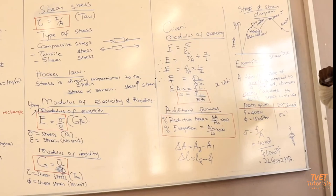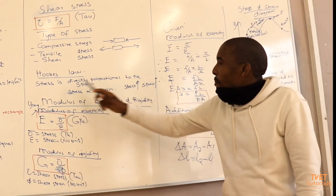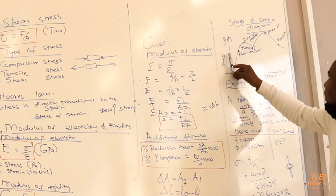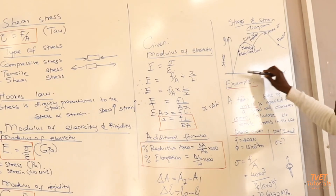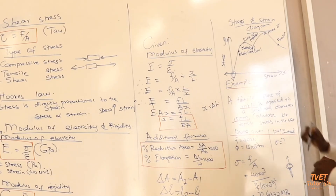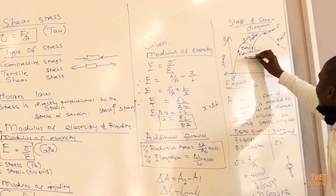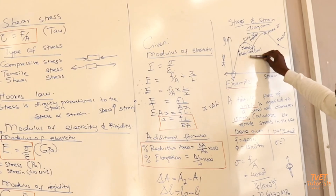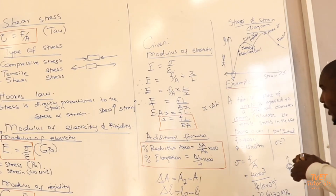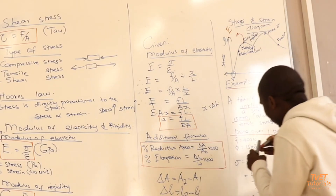The stress-strain diagram: stress is represented on the y-axis as the dependent variable, and strain is on the x-axis as the independent variable. On the diagram, there is an elastic limit at the lower yield point, and an elastic limit at the upper yield point. The limit of proportionality is the point where you find the modulus of elasticity E.